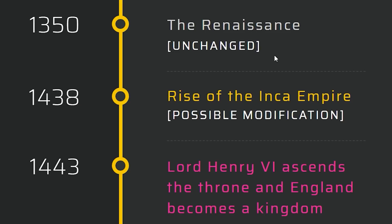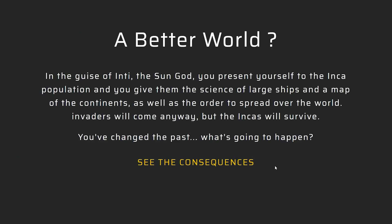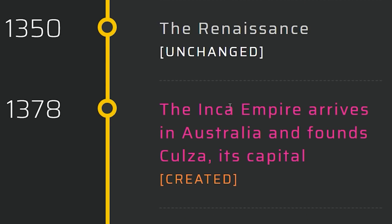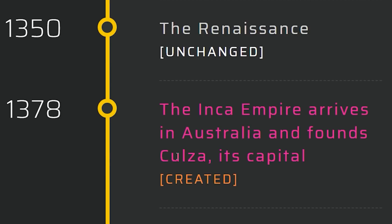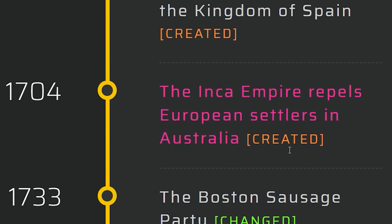Maybe we can still create somewhat of a native empire. I can prepare the Incas for European invasion, or teach the Incas the art of ocean navigation. That sounds exciting — where would they go? Australia! So their sun god has given the Incas the science of the oceans. The Incas arrived in Australia and founded Colza. The Inca empire has built a city of gold. In 1704, they repel European settlers in Australia.